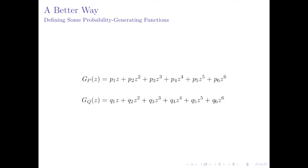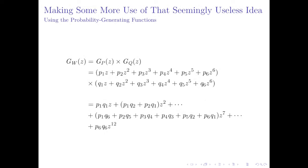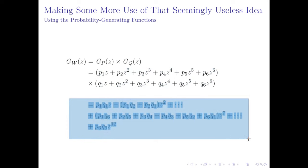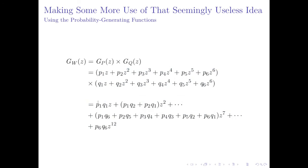The easier way uses our old friends, the probability generating functions. So we'll define g_p of z as p1·z plus p2·z² plus p3·z³, all the way up to p6·z⁶, and similarly g_q of z. These probability generating functions are going to make working toward a solution much, much easier. We can then define g_w of z as g_p of z times g_q of z, just like our example earlier. Multiplying this out gives us the coefficients of each power of z representing the probability of obtaining that value, but it's much easier to keep it factorised.